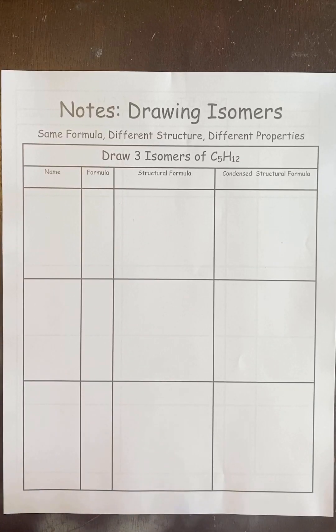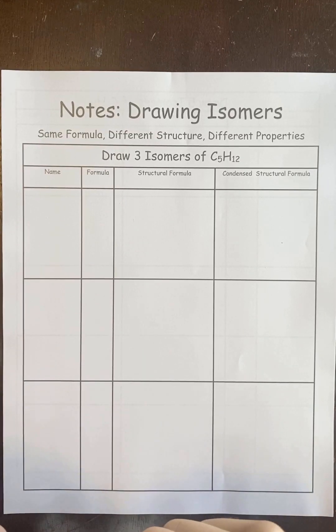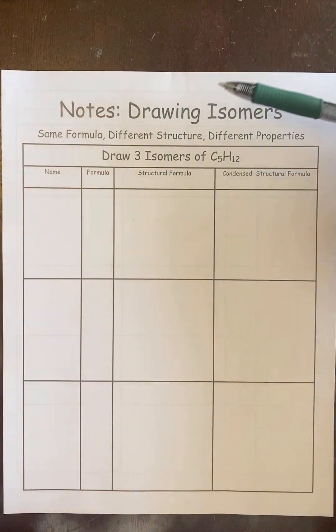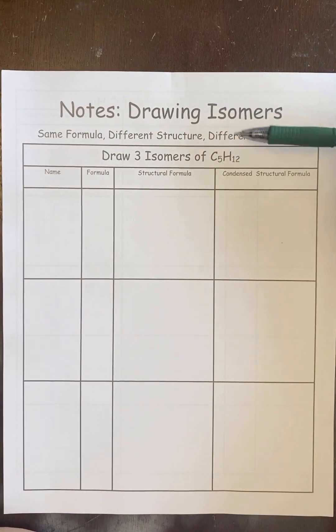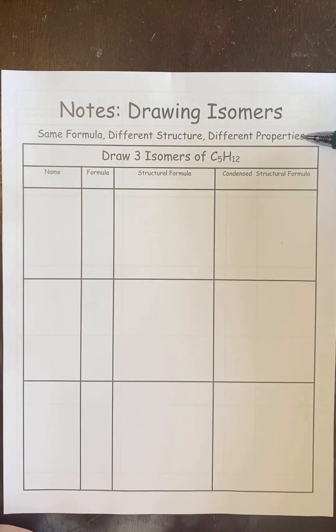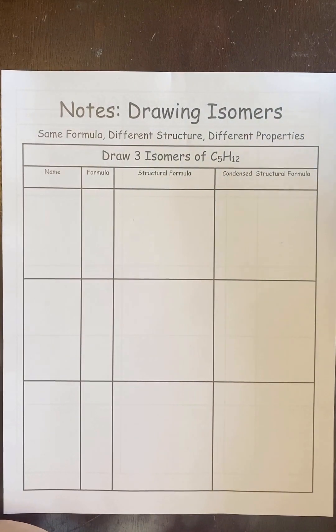Today we are going over how to draw isomers. An isomer is when you have the same chemical formula but a different structure and therefore different properties. It's the structure that causes the properties to be different.